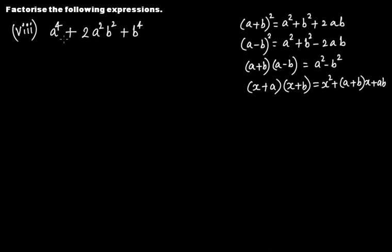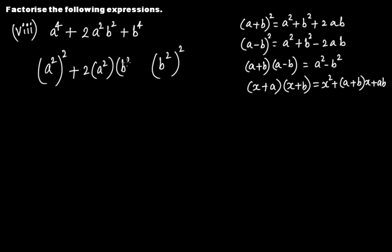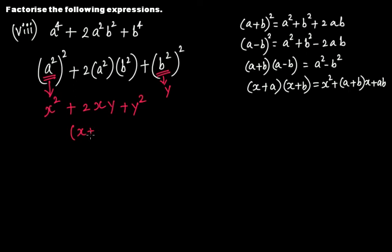For a⁴ + 2a²b² + b⁴: note that a⁴ = (a²)² and b⁴ = (b²)², so this is (a²)² + 2·(a²)·(b²) + (b²)². This is of the form x² + 2xy + y² = (x + y)², where x = a² and y = b². The factorization is (a² + b²)², using the identity (a + b)².